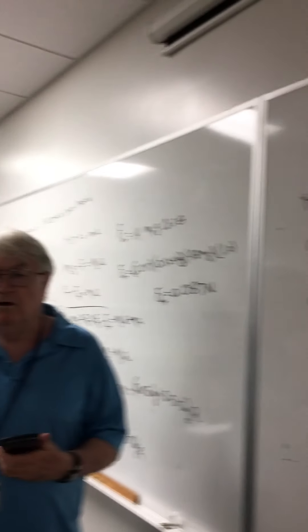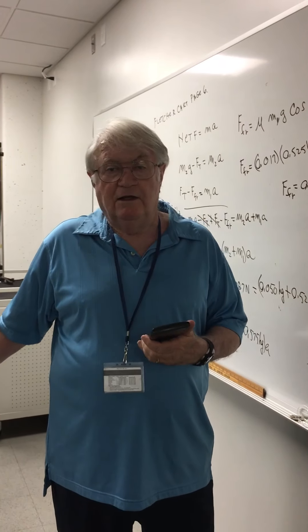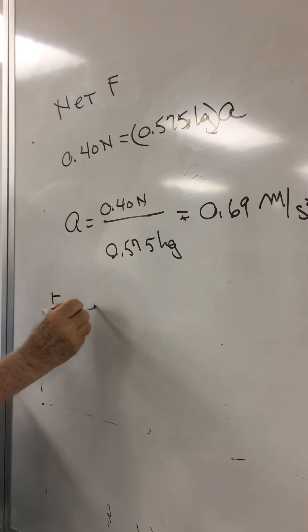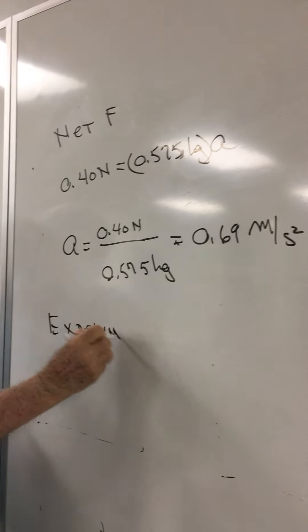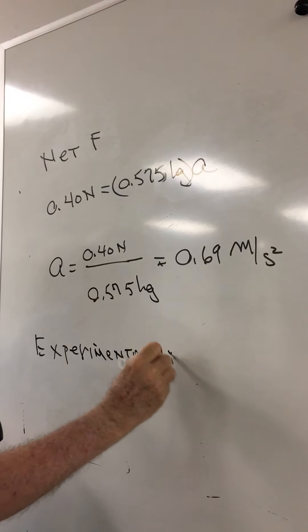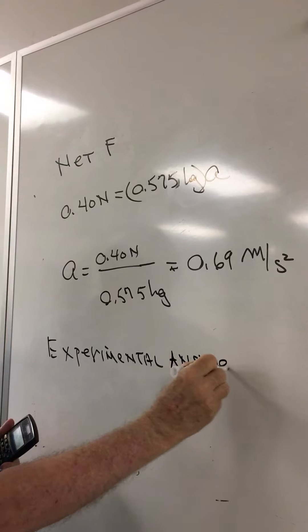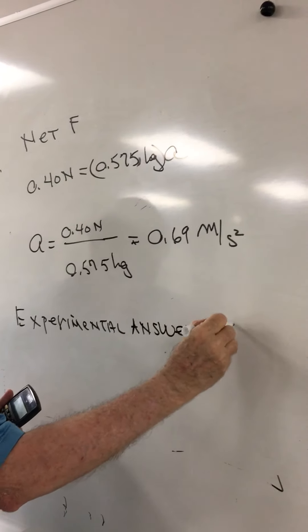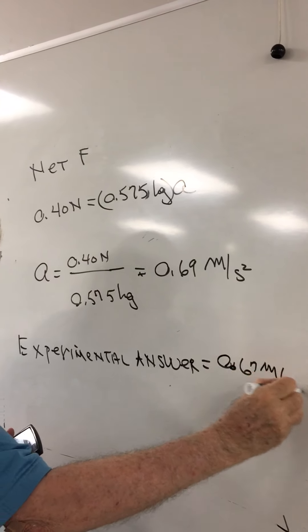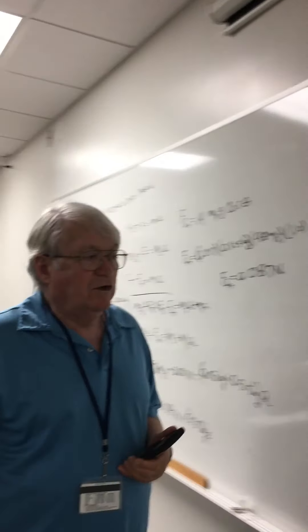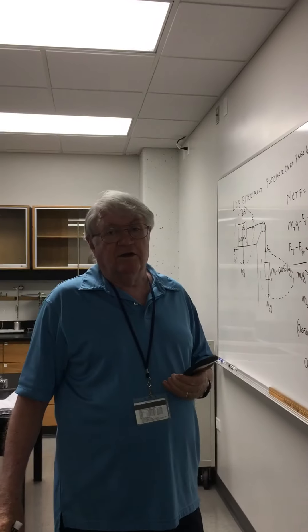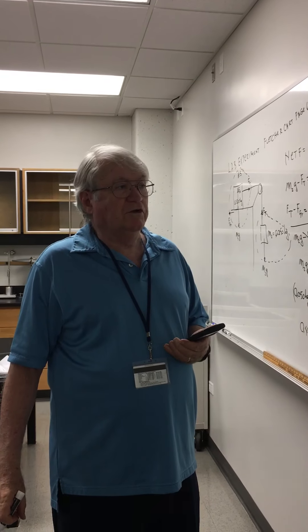Now when we worked it out over there, we got the answer to be experimental answer, it's about 0.67 meters per second squared. So they're off by about a couple of percent. But I'm not going to worry too much about that. You can work that out, figure out the percentage of errors. But it's probably about somewhere in the order of about 2% or so.